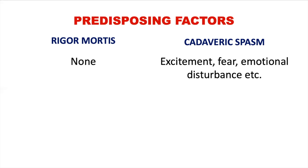Predisposing factors: there are no predisposing factors in rigor mortis, whereas in cadaveric spasm excitement, fear, emotional disturbances, etc. are the predisposing factors.